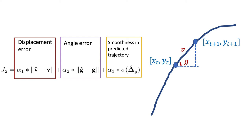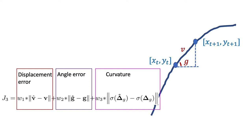The third model learns the curvature of trajectories by minimizing the pairwise distance between the standard deviation of the changing angle values between prediction and ground truth.